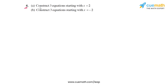In question 4 we have two parts, and in each part we have to construct three equations starting with a given value of x. This is actually quite easy — you can use any arithmetic operation and apply it to x to get any number of equations.